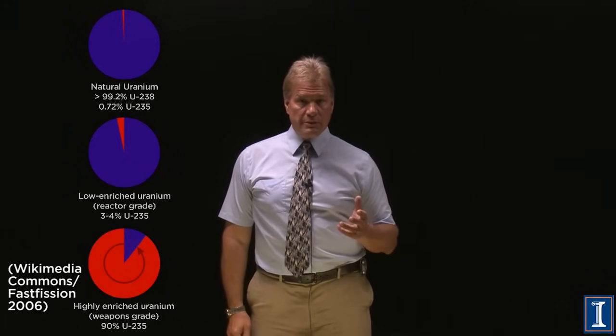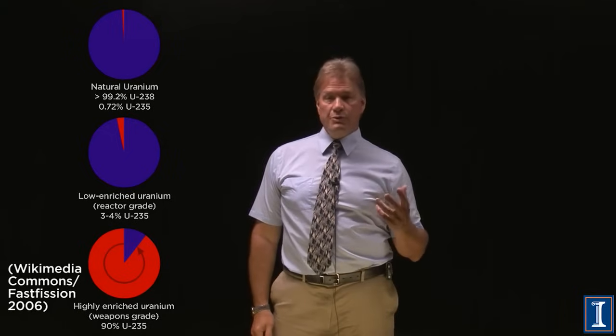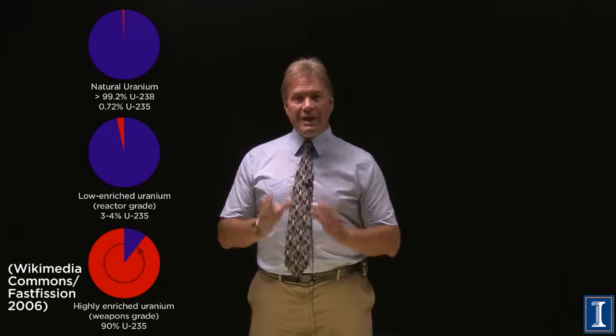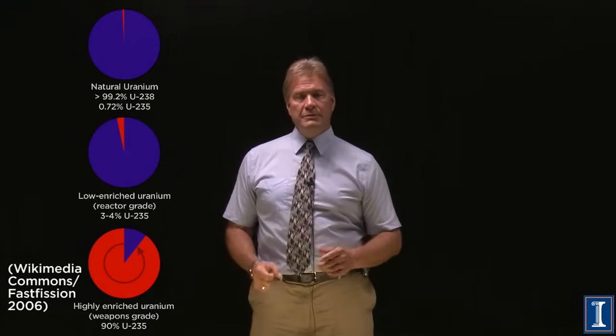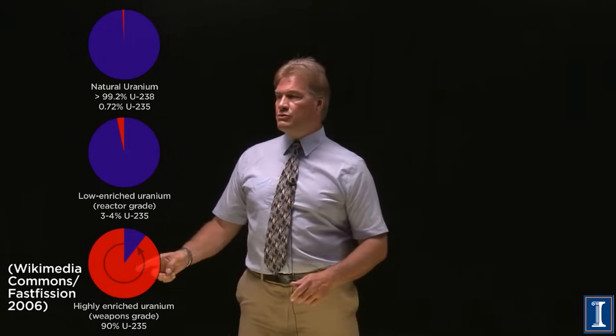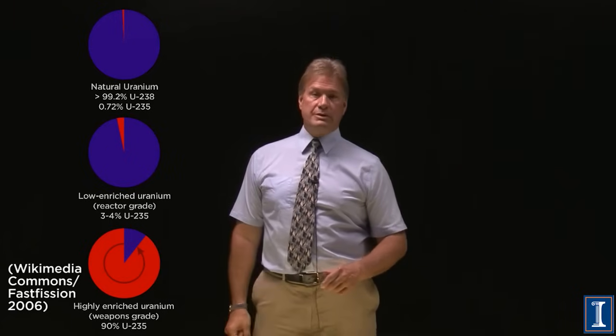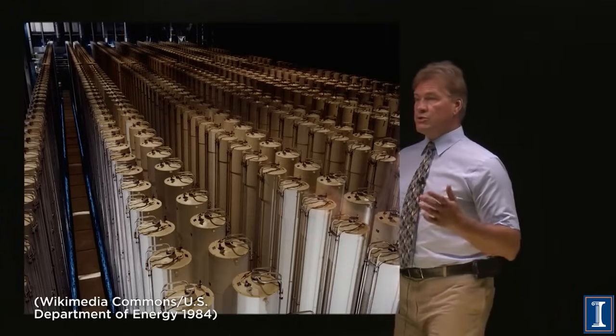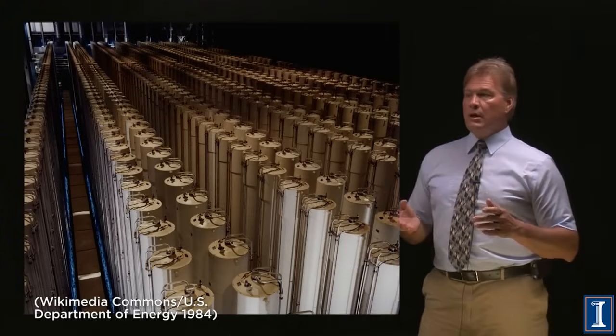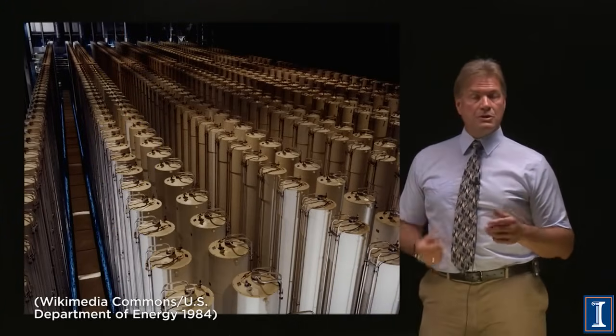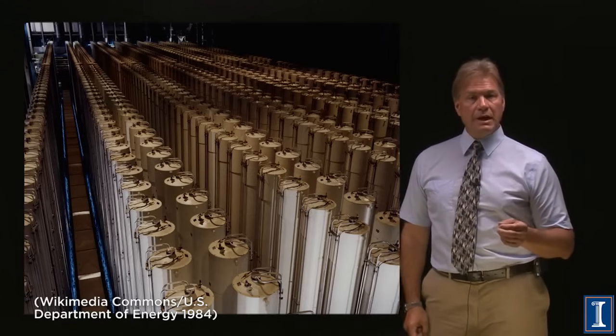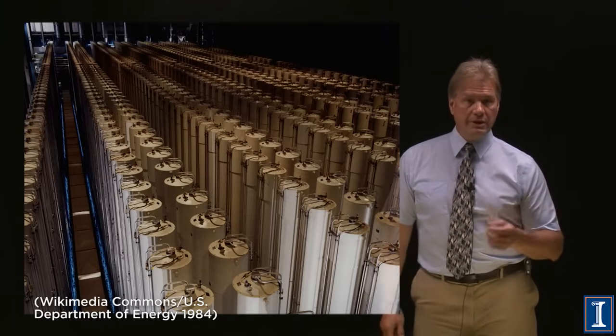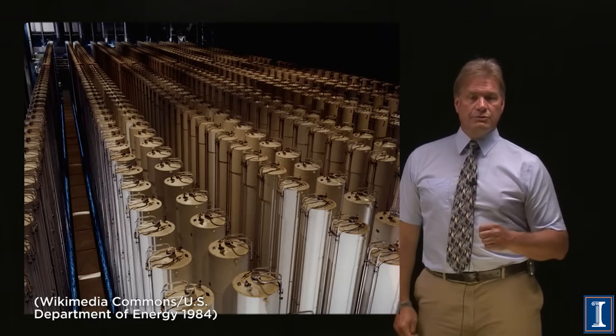To make a nuclear reactor work, you need to enrich that fuel to 3%. But that will not make an atom bomb. To make a bomb, you need the uranium-235 to be at 90%. That's why facilities like this one of centrifuges is very important. Enrichment facilities are large, they take a lot of energy and a lot of time to get the uranium up to that purity level of the U-235.